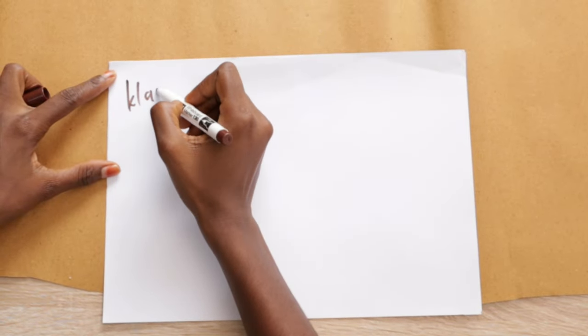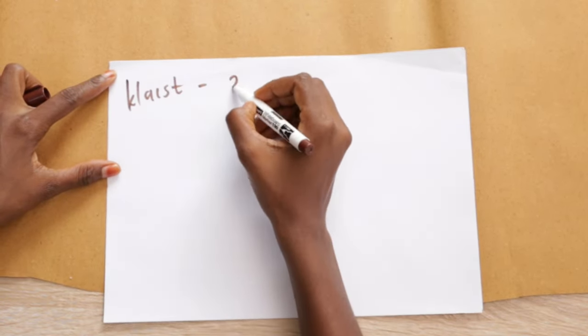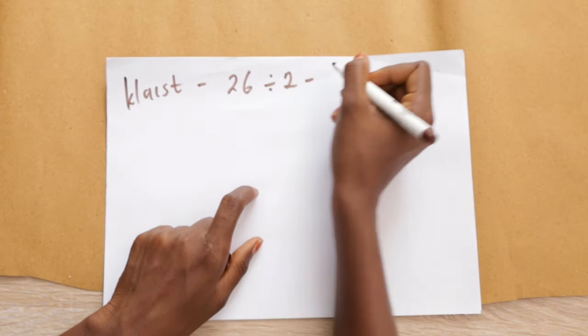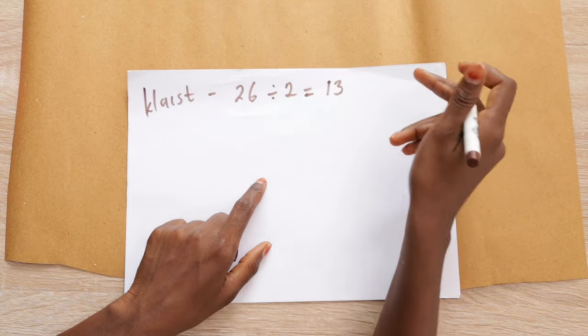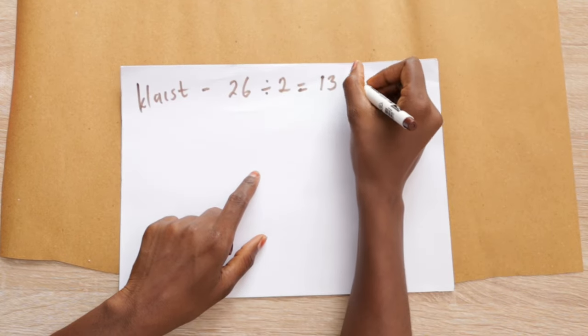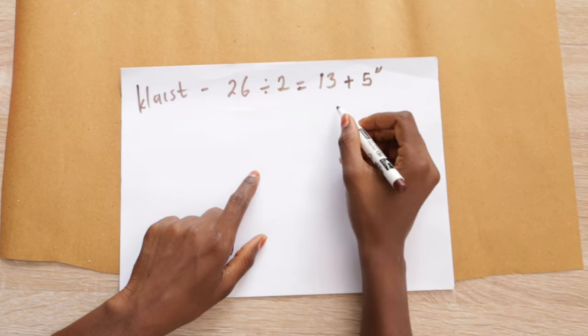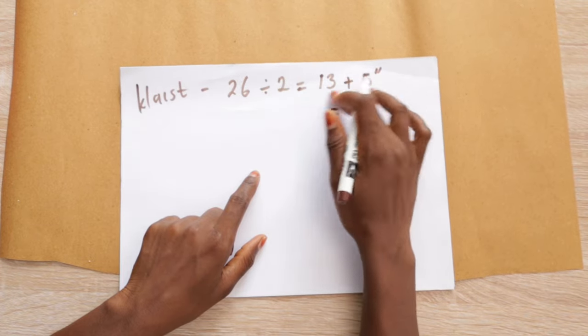You're gonna need your waist measurement. My measurement is 26 inches and I'm gonna divide that by 2, giving me 13. And I'm going to add 5 inches to the 13, which would give me 18 inches.